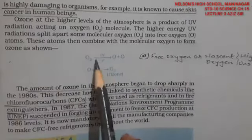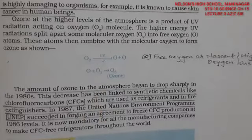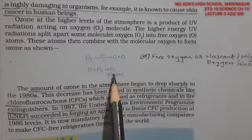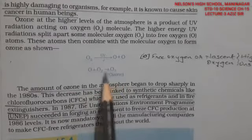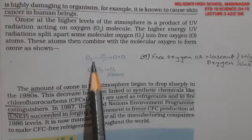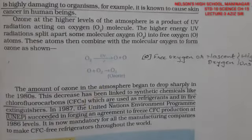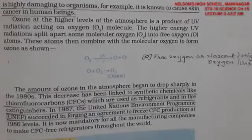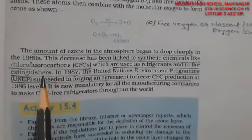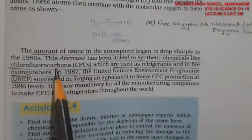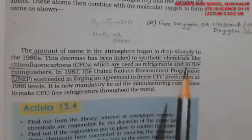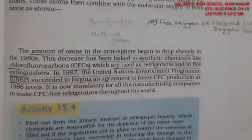Ozone helps by absorbing ultraviolet radiation and turning to O3, and this O3 again breaks down releasing the ultraviolet radiation back towards space and turning to O2. This is how it stops UV from reaching the earth. Now we enter as a villain — we release synthetic chemicals into the atmosphere, like CFCs: chlorofluorocarbons.